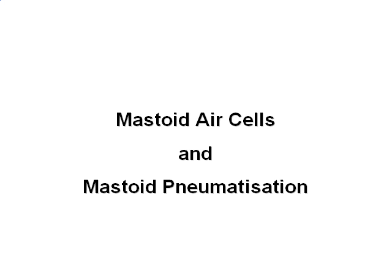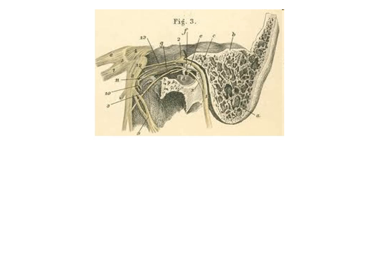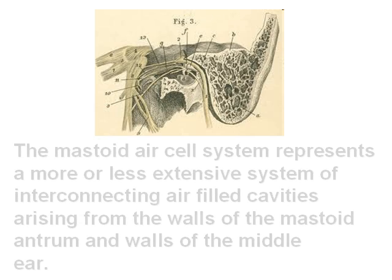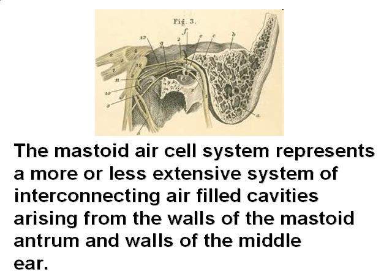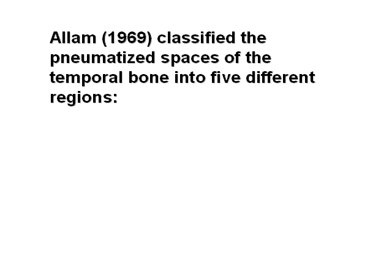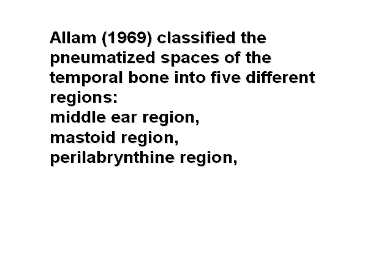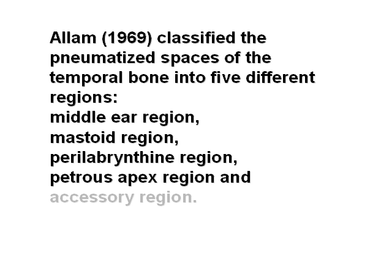The mastoid air cell system represents a more or less extensive system of interconnecting air-filled cavities arising from the walls of the mastoid antrum and walls of the middle ear. In 1969, Allam classified the pneumatized spaces of the temporal bone into five different regions: the middle ear region, the mastoid region, the peri-labyrinthine region, the petrous apex region, and the accessory regions.